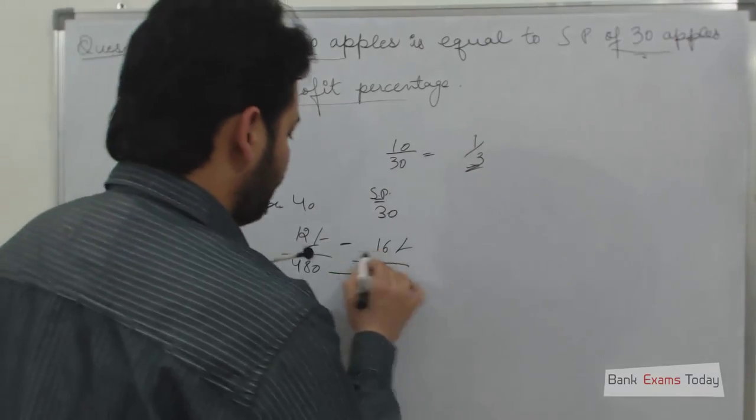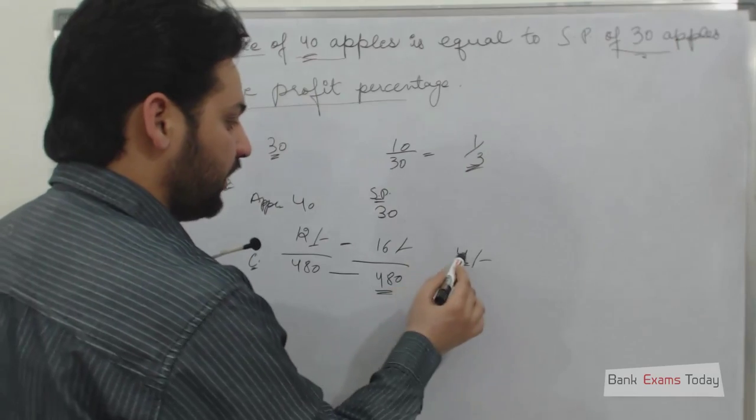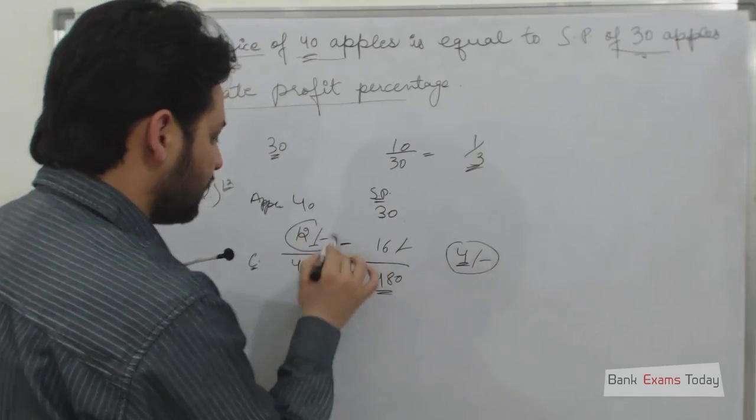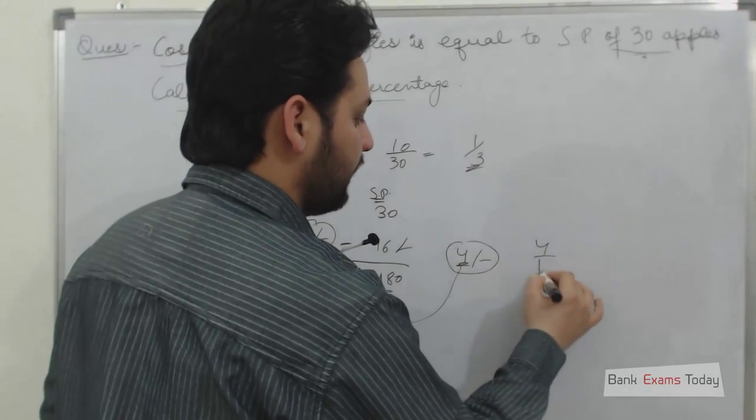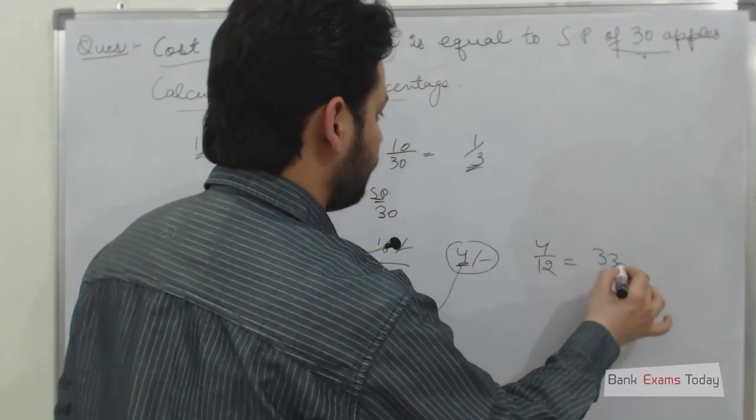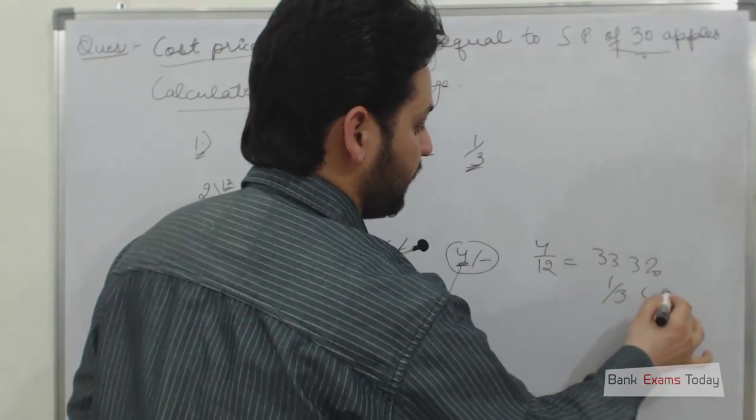Here he saves 4 rupees per apple. Then the profit percentage on the cost will become 4 over 12 is equal to 33%, 33.33% or 1 third of cost price.